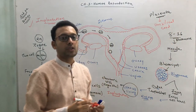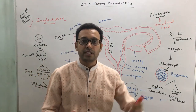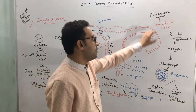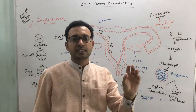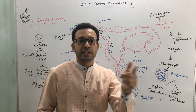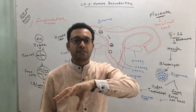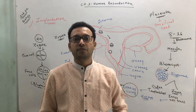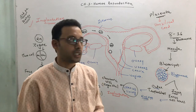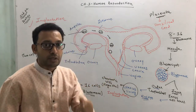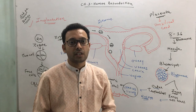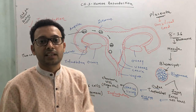The placenta is connected to the fetus via the umbilical cord, which acts as a bridge for transport of oxygen and nutrients from the mother's body to the fetus, and transport of waste and carbon dioxide from the fetus to the mother's body. The formation of placenta is called placentation.